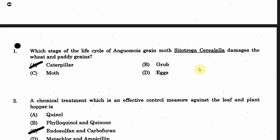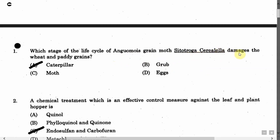The first question is: Which stage of the life cycle of Anguomoids damages the wheat and peregrines? Option A: Caterpillar. Option B: Grub. Option C: Mouth. Option D: Eggs. The correct answer is Option A, that is Caterpillar.